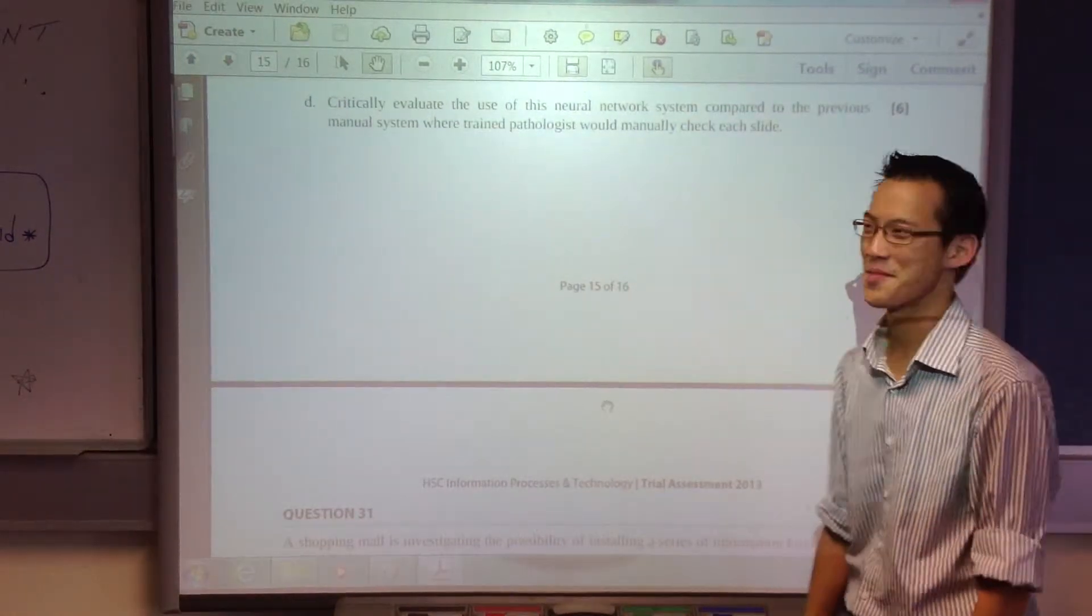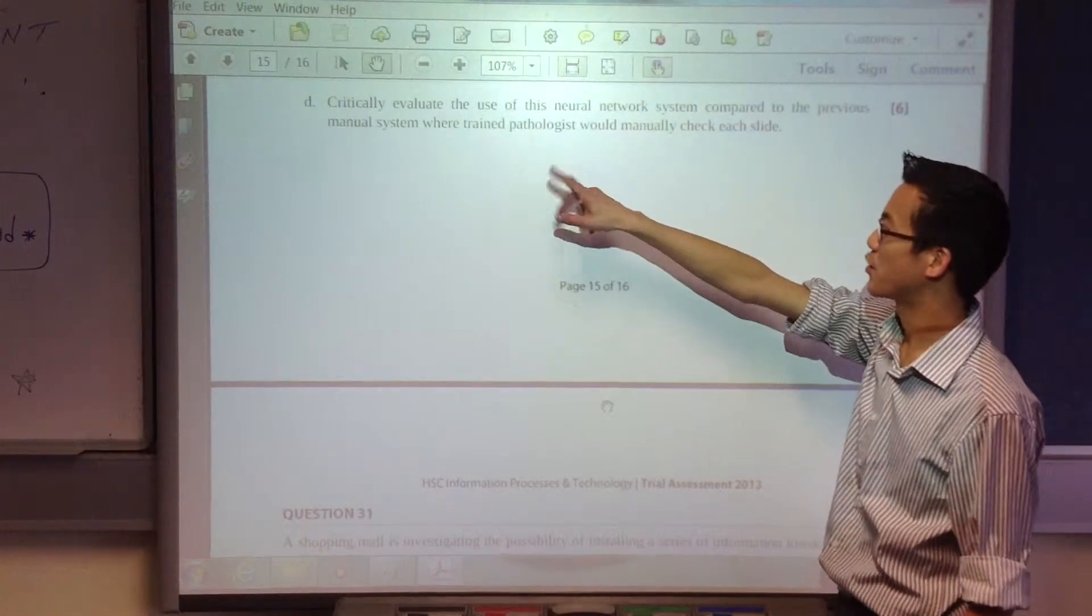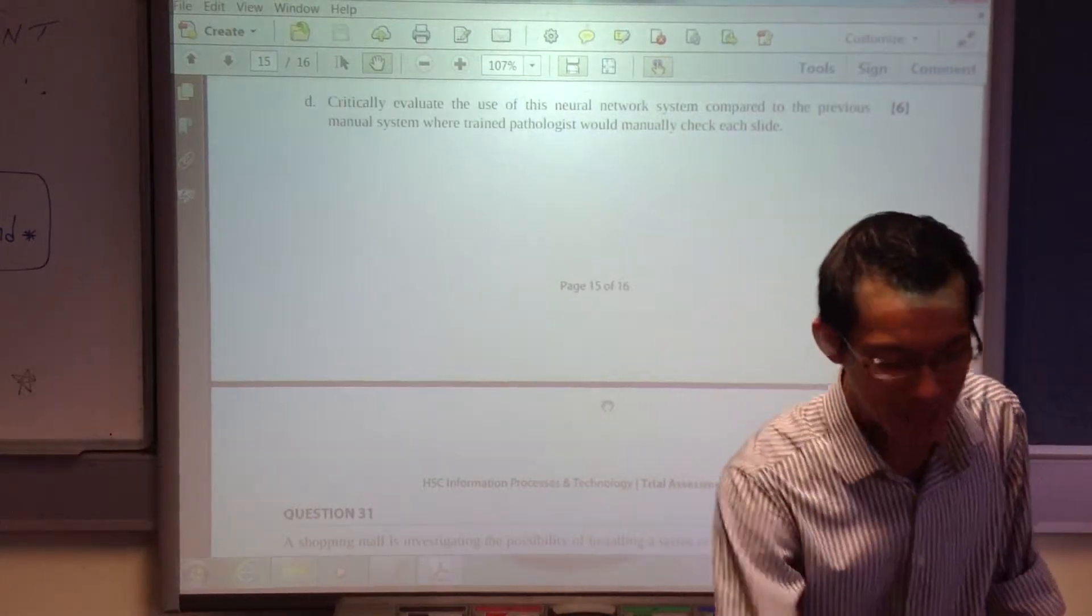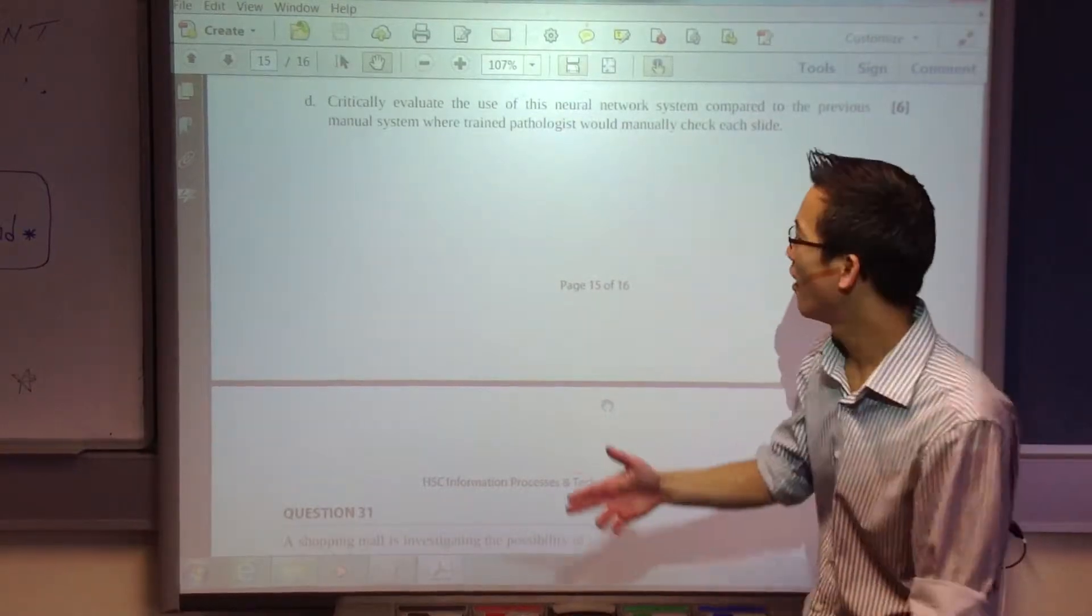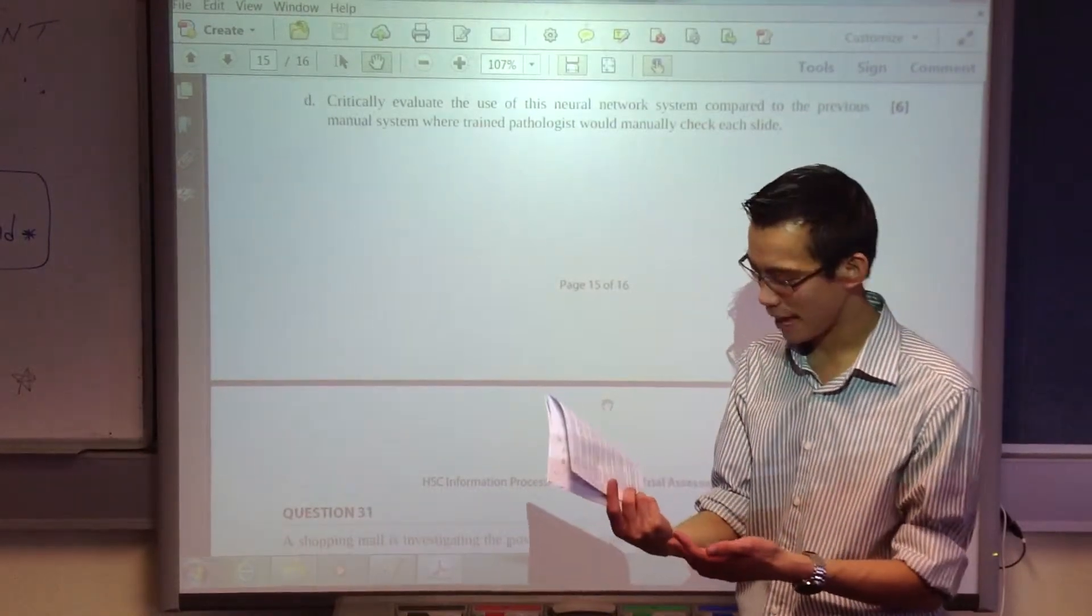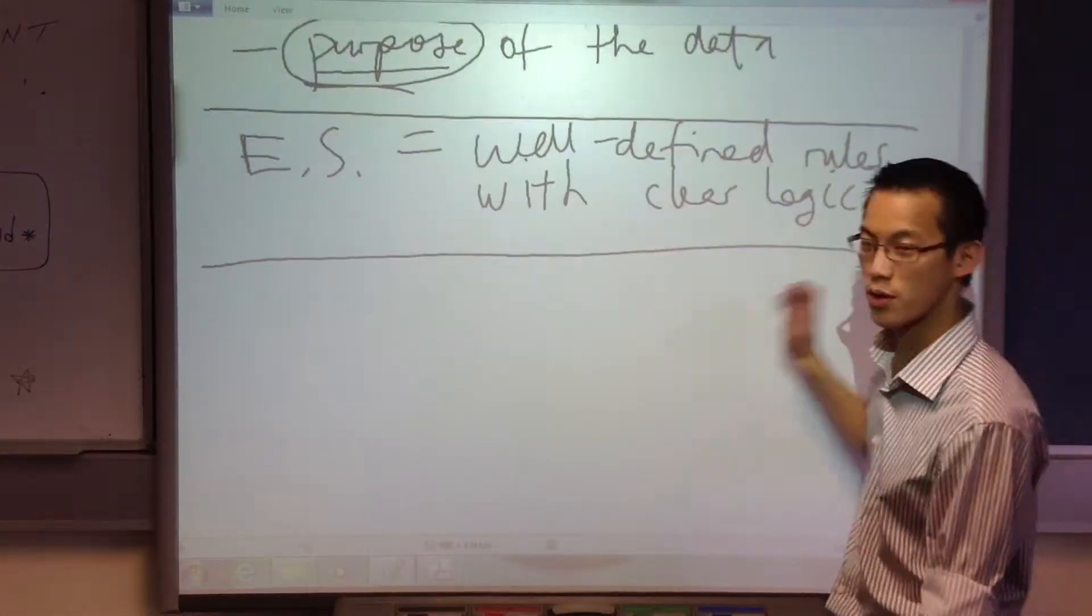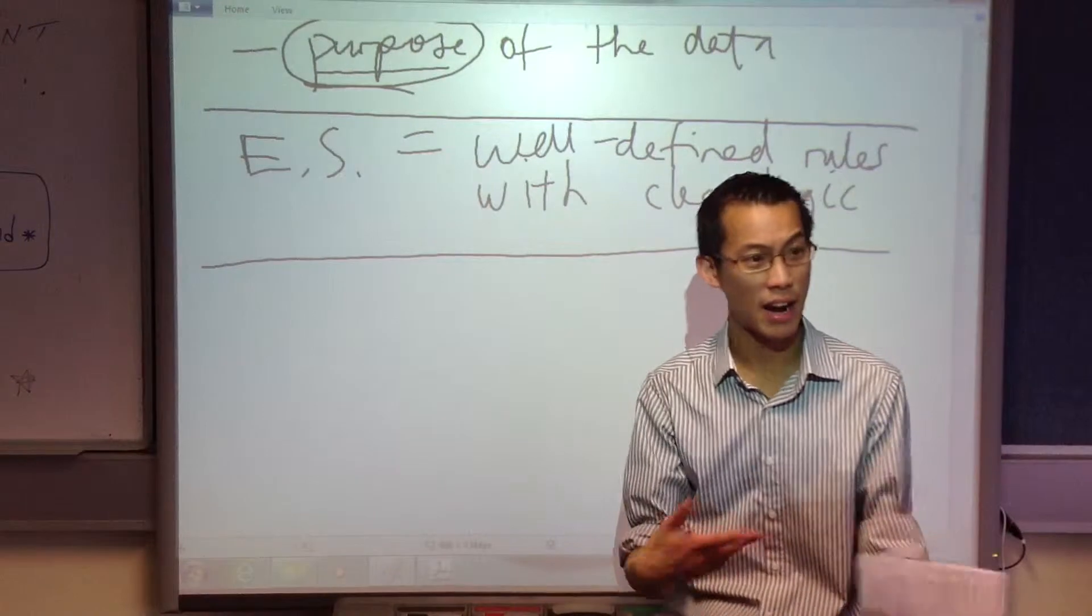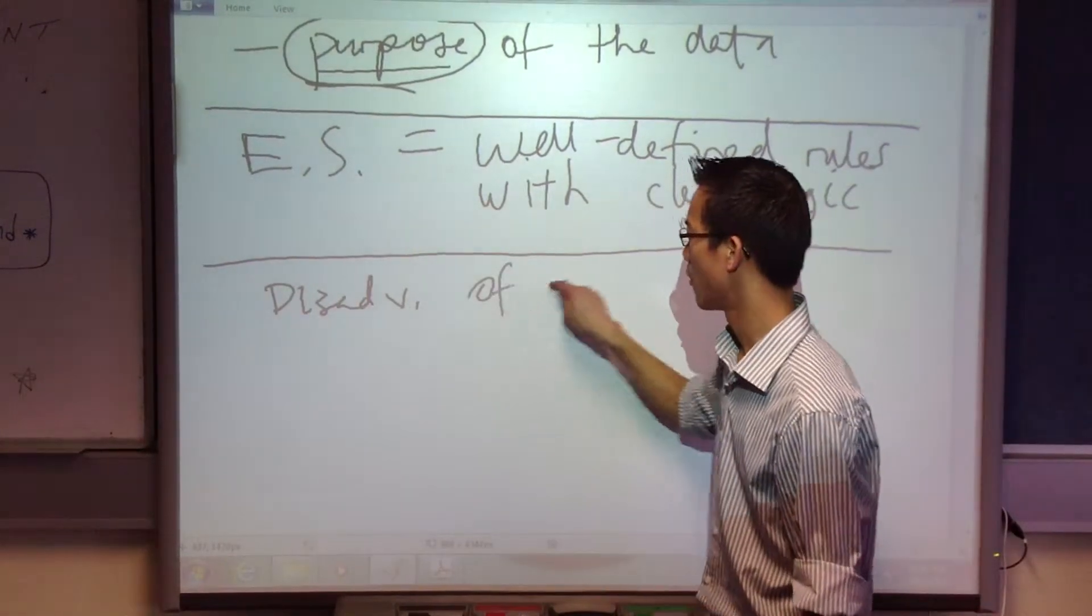So let me try and finish up. Critically evaluate the use of this neural network system compared to the previous manual system where trained pathologists, plural, would manually check each slide. For six marks, I was looking for not just six aspects, but were you evaluating in a sophisticated way? So let me show you, how many points did I have? I had a lot of points. So see if you can keep up. Let's start by saying, if I'm trying to evaluate, I'm going to try and compare these two things.